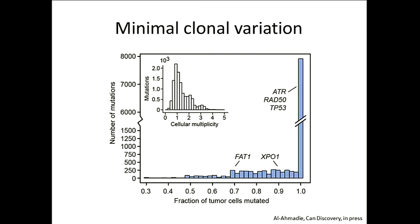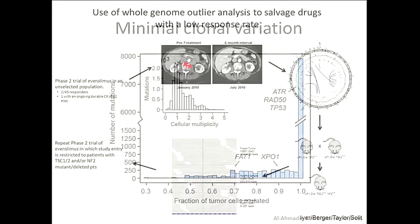One important point is this issue of clonality. We think one of the reasons this woman had such a great response to the CHK1 inhibitor with chemotherapy is that the RAD50 mutation was found in every single cancer cell — it was a clonal alteration. And overall she just had very little subclonal architecture. The hypothesis is that if you've got a lot of subclonality within your tumor, maybe you've got some resistant subclones already present, and your odds of being one of these extraordinary long-term responders is probably pretty small.